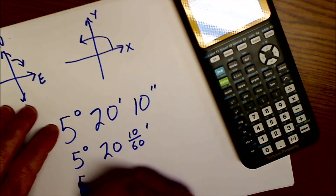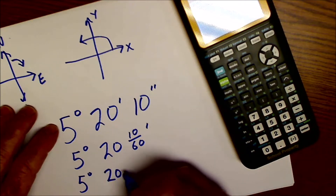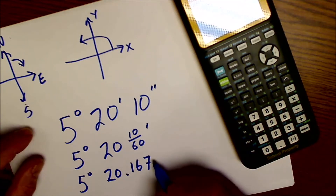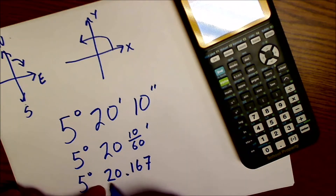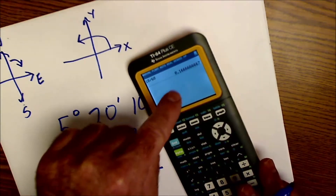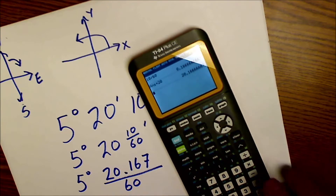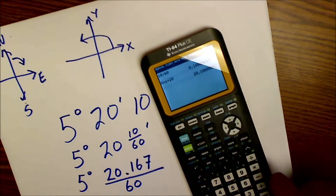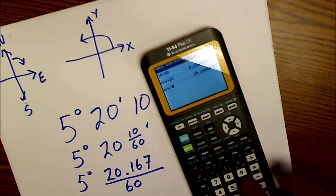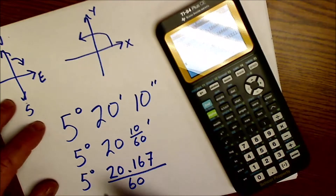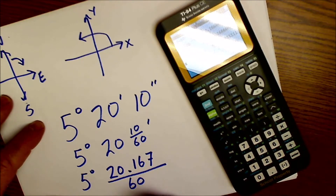So that means I have 5 degrees, 20.167 minutes — that's 20 of 60. I keep that on my calculator to avoid losing significant digits. I add 20 to it and now I have 20.1667. I'm going to divide that number by 60 and it gives me 0.336. So that gives me 5.336 degrees.